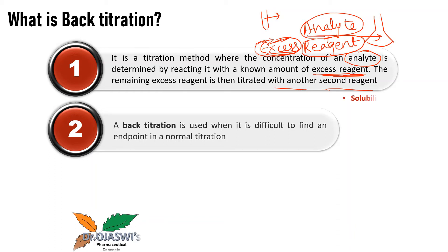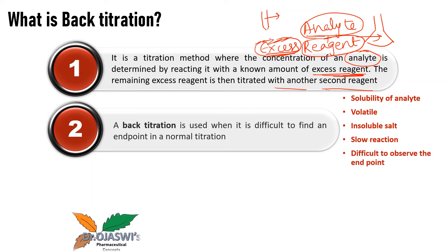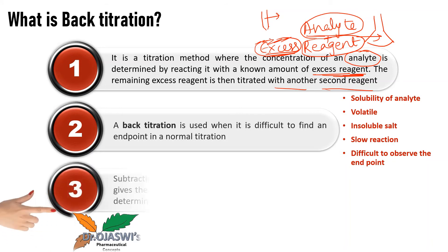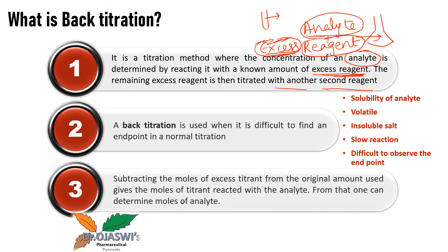Back titrations are used when the analyte is not very soluble in water, when one of the reactants is volatile such as ammonia, when an acid or base is an insoluble salt such as calcium carbonate, when a particular reaction is too slow, or when the direct titration would involve a weak acid or weak base titration where the endpoint is very difficult to observe.